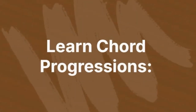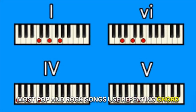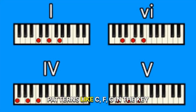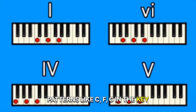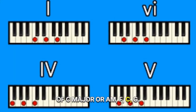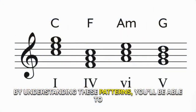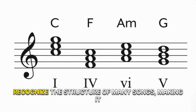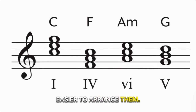Learn chord progressions. Most pop and rock songs use repeating chord patterns like C, F, G in the key of C major, or A minor, F, C, G. By understanding these patterns, you'll be able to recognize the structure of many songs, making it easier to arrange them. Listen to your favorite songs and try to figure out the chord progressions.